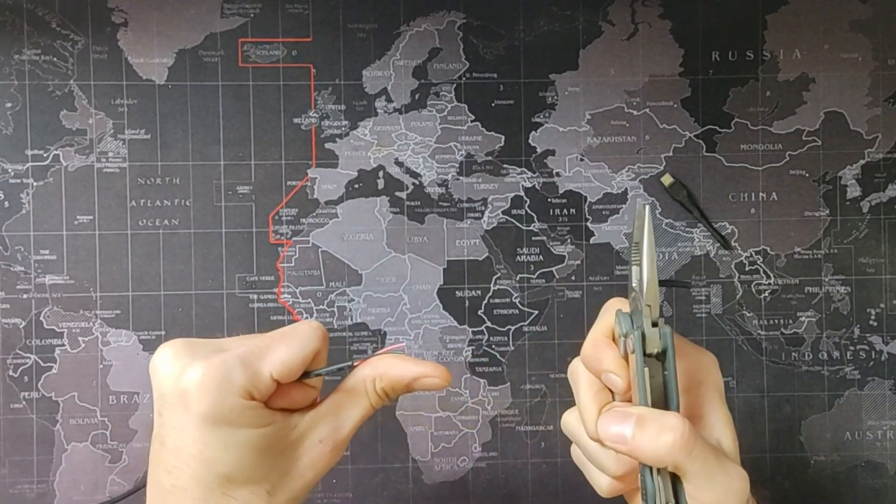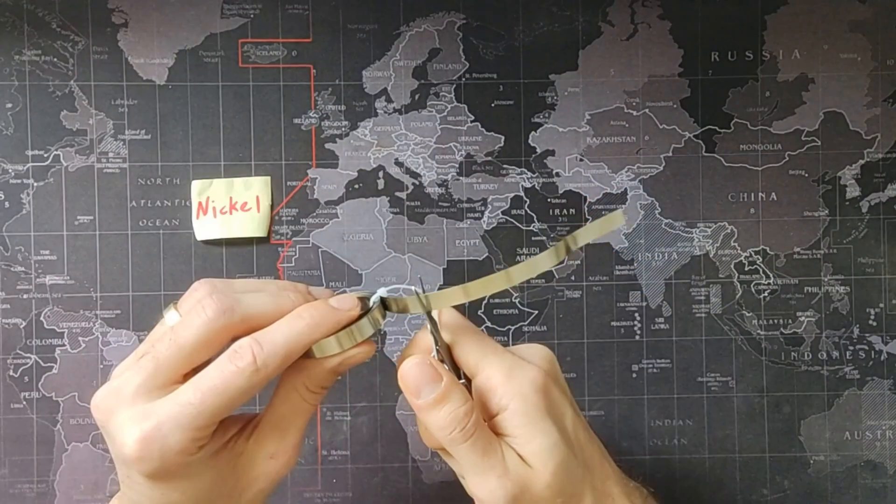Chop the head off the USB cable, undress it, strip the wires, and cut two nickel strips.